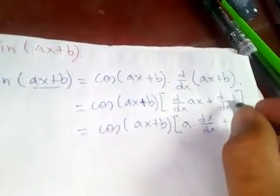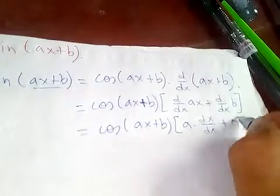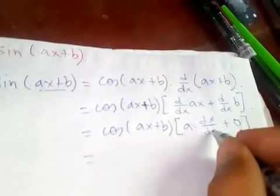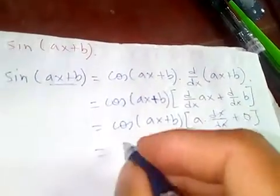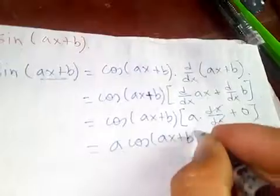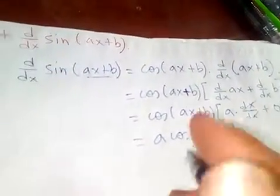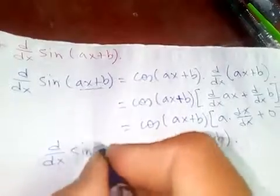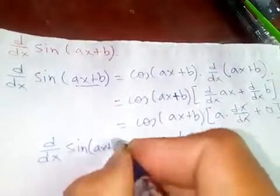Since b is constant and derivative of constant is zero, so then derivative of x with respect to x is just one. So it will be a cos ax plus b. So this is the derivative of sine of ax plus b.